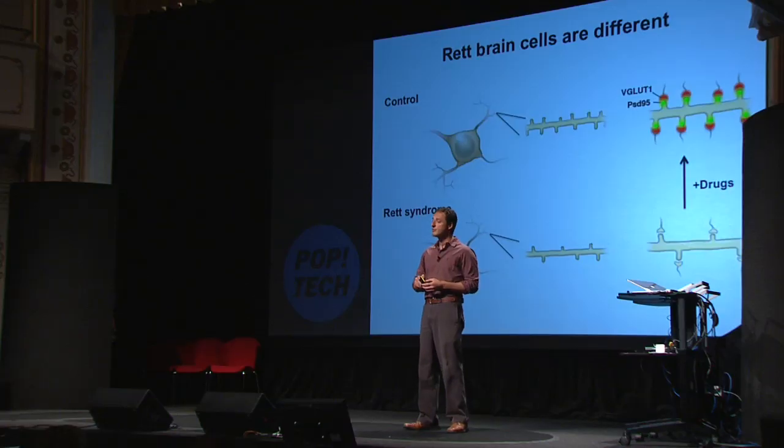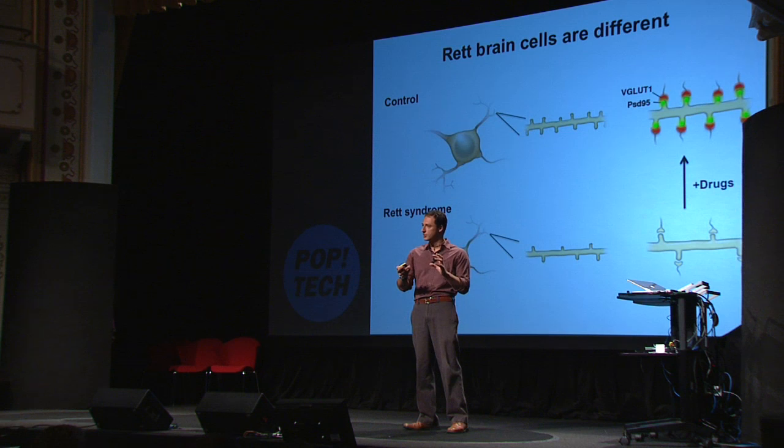Imagine the possibilities. We can now ask if those differences are permanent — in other words, if you can revert that. We started treating these brain cells with some chemicals, and we actually found some drugs that are able to revert that condition.